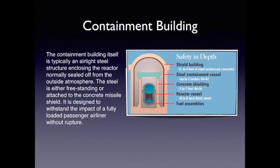The containment building is typically an airtight steel structure enclosing the reactor, normally sealed off from the outside atmosphere. The steel is either freestanding or attached to a concrete missile shield. It is designed to fully withstand the impact of a loaded passenger airliner without rupture or exposing the reactor core to the environment. The shield building is anywhere from 3 to 4 feet of steel-reinforced concrete, the steel containment vessel itself is 2 inches of thick metal plate, inside that there is up to 7 feet of concrete shielding, and the reactor vessel itself has 8 to 9 inch thick steel plating.